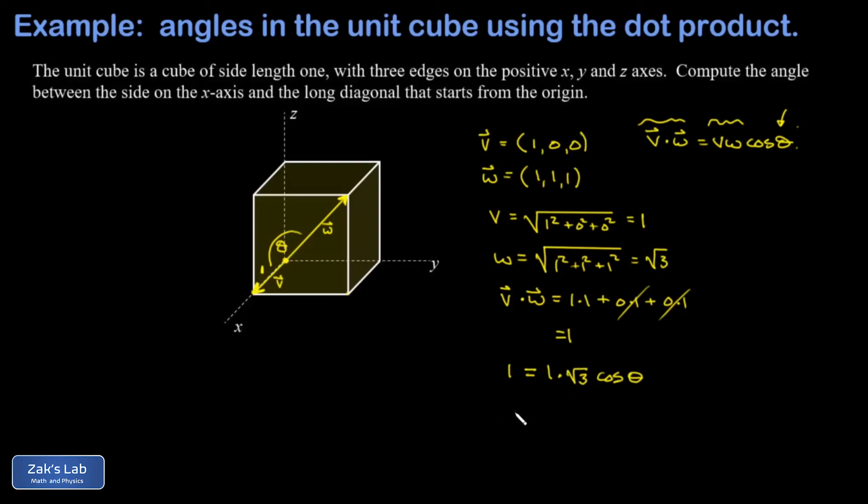I divide by root 3 on both sides and solve for theta. That's the inverse cosine of 1 over root 3, which to three significant figures is 54.7 degrees.